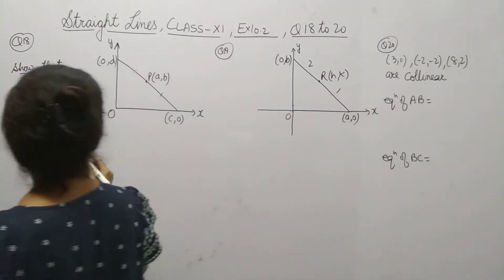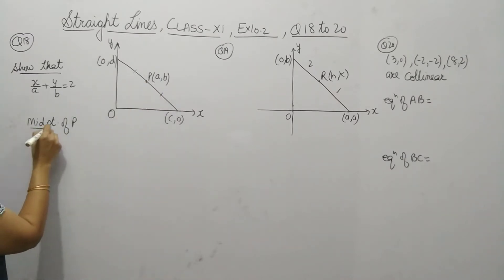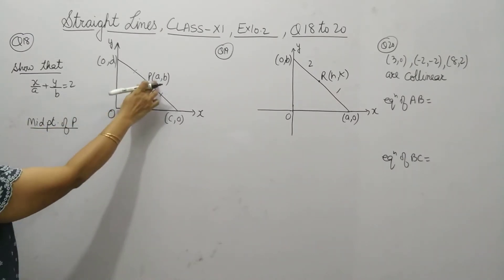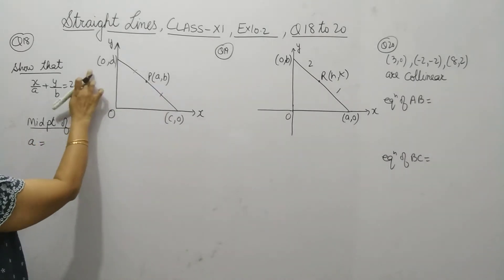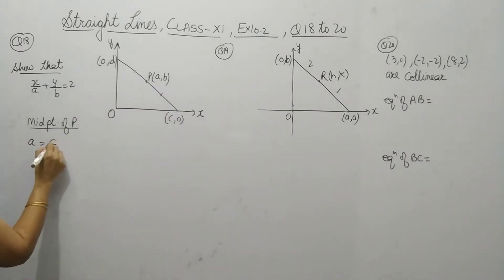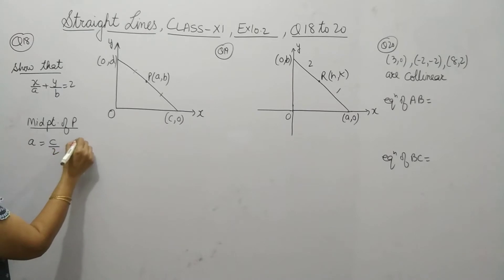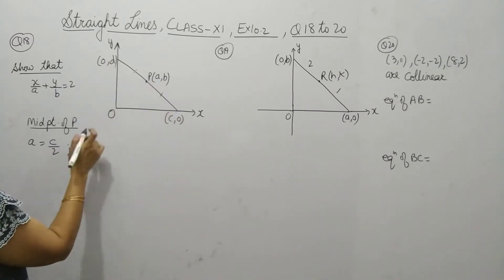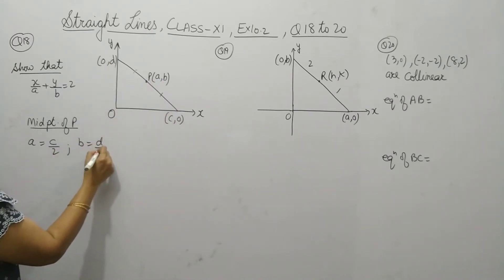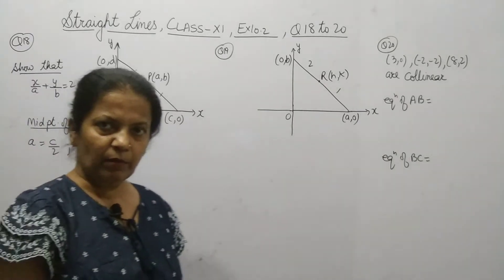So first we will find out the midpoint P. By using the midpoint formula: a equals (0 + c) upon 2, which means c upon 2. And b equals (d + 0) upon 2, so it will come as d upon 2.